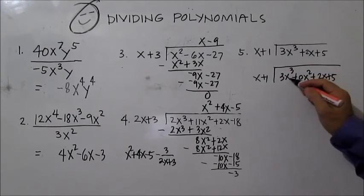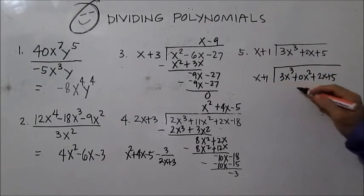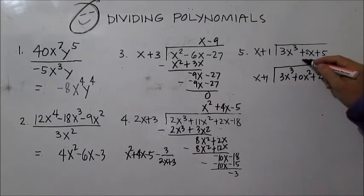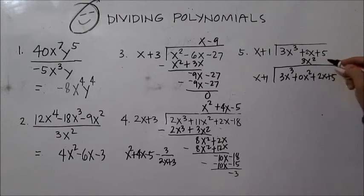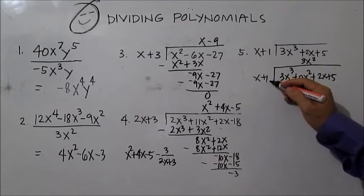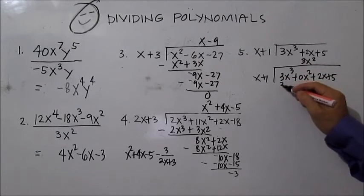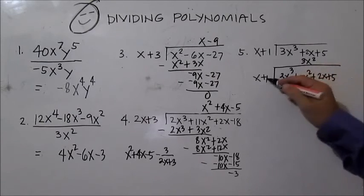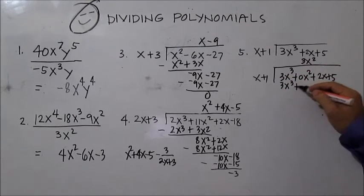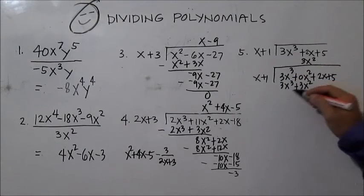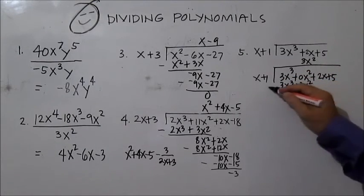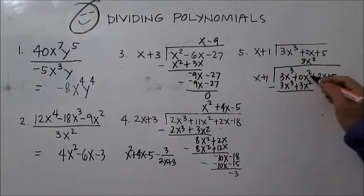Divide the first terms: 3x cubed divided by x is 3x squared. Multiply 3x squared by x plus 1: 3x squared times x is 3x cubed, plus 3x squared. Subtract — this is 0, and 0x squared minus 3x squared is negative 3x squared. Bring down 2x.